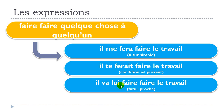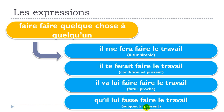For the third person singular masculine using futur proche: il va lui faire faire le travail. For the subjonctif présent, third person — and in that case it's the feminine, though the pronoun is exactly the same — qu'il lui fasse faire le travail. To review: il me fera faire le travail (future simple), il te ferait faire le travail (conditionnel présent), il va lui faire faire le travail (futur proche), qu'il lui fasse faire le travail (subjonctif présent).